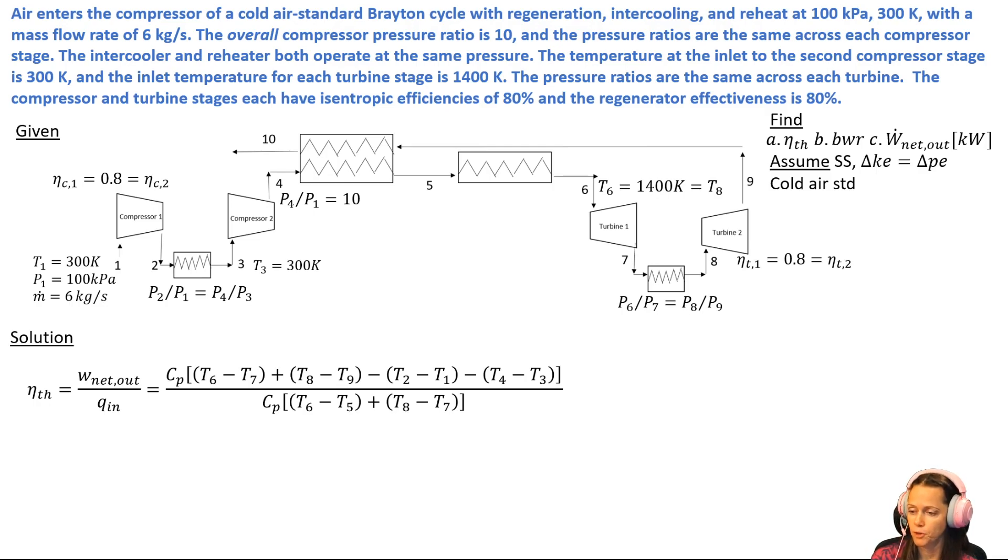My work input for the turbines between 1 and 2 and 3 and 4, once again applying my first law to each one of those compressors and getting it in terms of delta H's and putting the delta H's in terms of CP delta T's.